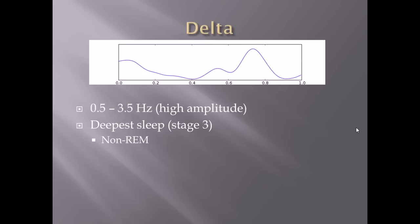Let's move on to delta waves. Delta waves are going to be the least frequent wave, with a frequency of about 0.5 to 3.5 hertz — some sources say 0 to 3.5, but 0 would be a flat line. Notice how they're high amplitude but low frequency waves. You'll see delta waves in the deepest stages of sleep that are non-REM sleep, so that would be stage 3 sleep.